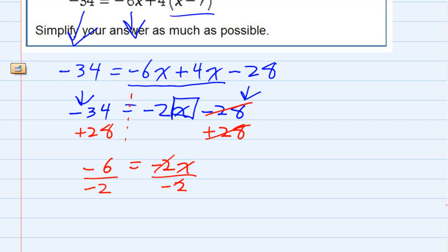Those negative 2's now cancel, leaving me with just x on the right, and on the left, when the signs are the same for division, we get positive 6 divided by 2, I get positive 3. So our answer to our equation is x equals 3.